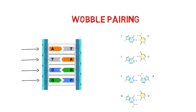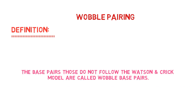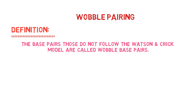For example, UG, IC, IA, and UI are called wobble base pairs. So base pairs that do not follow the Watson and Crick model are called wobble base pairs.